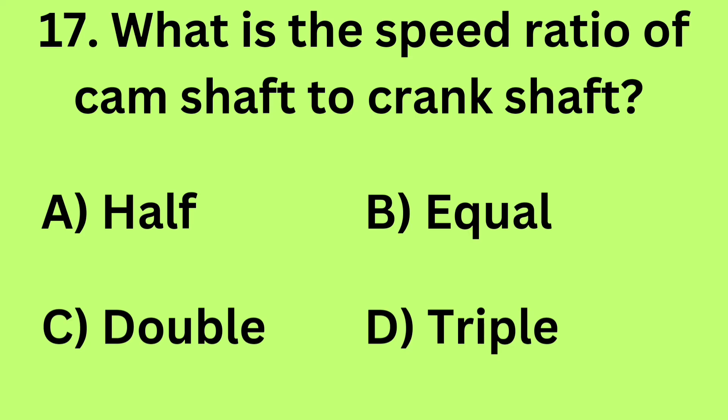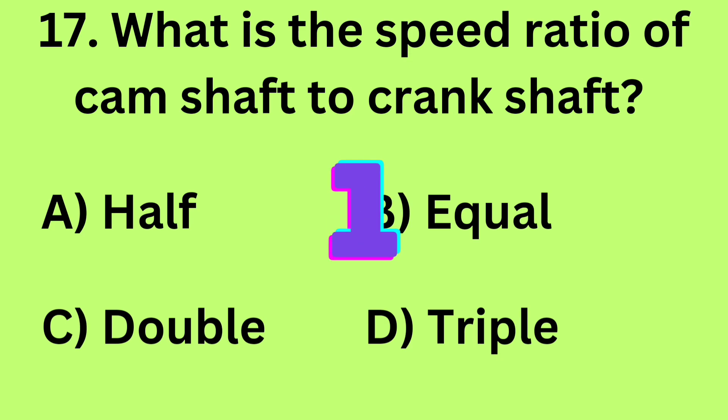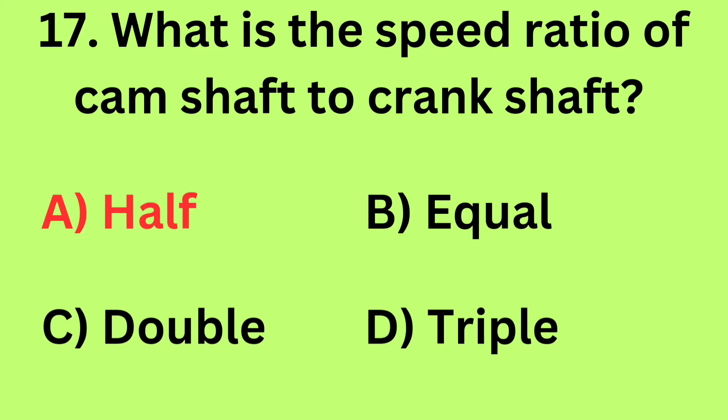Question 17: What is the speed ratio of camshaft to crankshaft? A. Half, B. Equal, C. Double, D. Triple. Answer: A. Half.